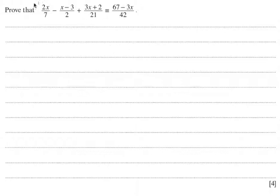To deal with this problem, I'm going to work with the left hand side of this identity. What I want to do is get this all over a common denominator. Looking at the terms along the bottom, the lowest common multiple of 7, 2, and 21 is 42. So I'm going to put this all over 42.